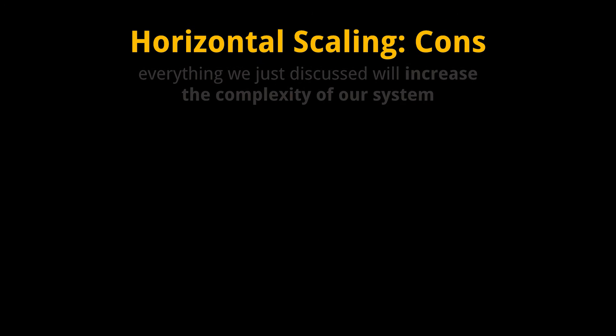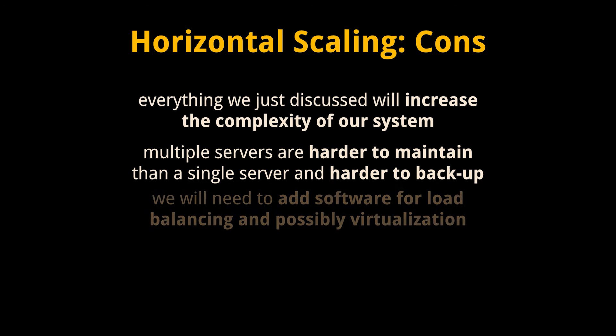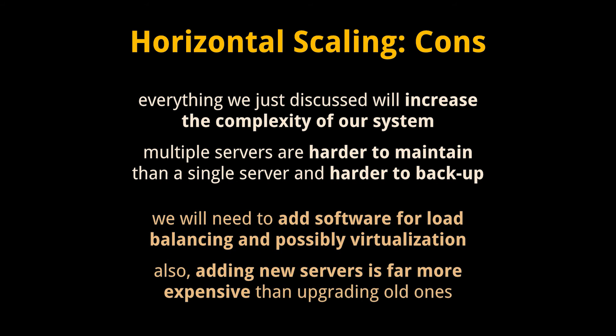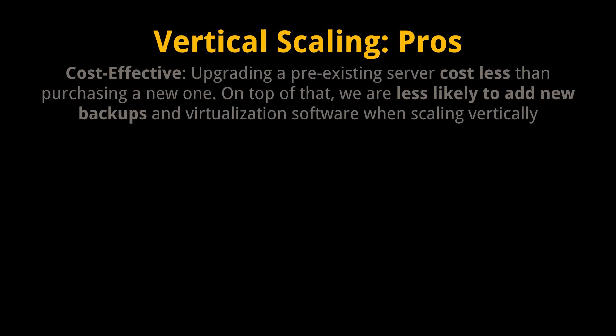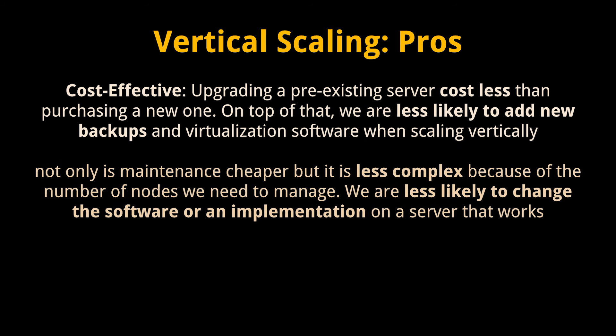However, everything we just discussed will increase the complexity of our system. Multiple servers are harder to maintain than a single server and harder to back up. Additionally, we will need to add software for load balancing and possibly virtualization. Adding new servers is also far more expensive than upgrading old ones. Because of that, vertical scaling is deemed cost effective — upgrading a pre-existing server costs less than purchasing a new one. We are less likely to add new backup and virtualization software when scaling vertically, so maintenance costs may potentially remain the same. Maintenance is also less complex because of the fewer nodes we need to manage, and we are less likely to change the software or implementation on a server that works.